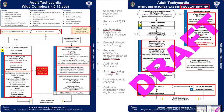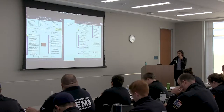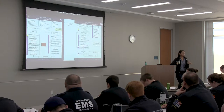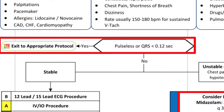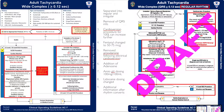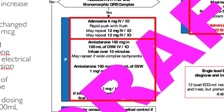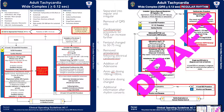Adult tachycardia, wide complex regular rhythm. This is a change in itself because it used to be just one protocol for wide complex tachycardia — we've separated it into regular and irregular to align with the state. Removal of QRS information similar to prior protocols. Cardioversion procedure at 100 joules. Fentanyl standardized dosing 50 to 75. We've removed amiodarone dosing following electrical cardioversion. Addition of adenosine for SVT with aberrancy. Amiodarone dosing is now 100 in 100, and lidocaine dosing changed from 1.5 to 1 milligram per kilogram. Same post-conversion information.